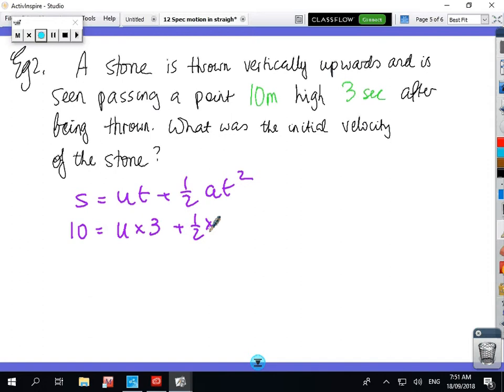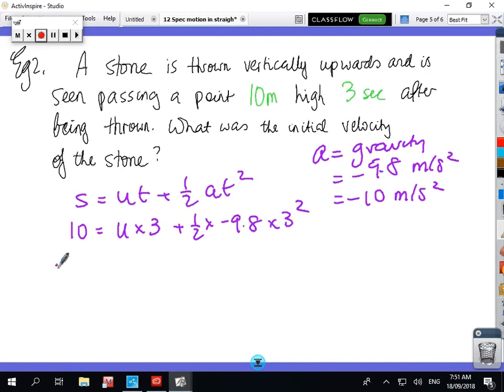Now, acceleration due to gravity, just in case you didn't know, it's minus 9.8, so that's an assumption for gravity. So that's minus 9.8 metres per second squared. So sometimes in some books, they just make it minus 10, but we'll make it minus 9.8 to be accurate, times 3 squared. So, 3U equals 10 plus 1/2 times 9.8 times 3 squared, and then just divide through by 3, and that gives you 18, about 18 metres per second.